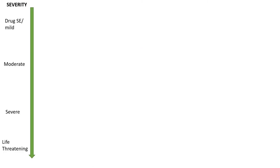Let's look at the triad in more detail. On the left-hand side of the slide you can see a severity scale, and at the top — where we have 'mild' — we also have 'drug side effect.' A key thing to understand is that patients on these drugs, say an SSRI, may get a mild tremor, dilated pupils, or be a bit more sweaty than usual — that's not necessarily toxicity, it's a side effect. It's a spectrum from side effects all the way up to life-threatening features.